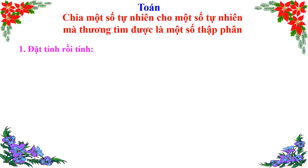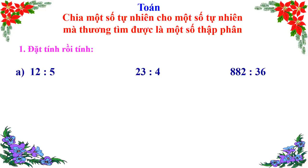Bài tập số 1: Đặt tính rồi tính. A: 12 ÷ 5; B: 23 ÷ 4; C: 882 ÷ 36. Bài tập yêu cầu chúng ta đặt tính rồi thực hiện phép tính. Các em hãy bấm dừng video tại đây và thực hiện bài tập số 1 vào vở. Các em đã hoàn thành bài tập rồi, bây giờ hãy hướng lên màn hình để cùng sửa bài với thầy.